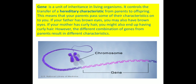A gene is a unit of inheritance in living organisms. It controls the transfer of hereditary characteristics from parents to offspring. This means your parents pass some of their characters on to you — if your father has brown or grayish eyes, you may have the same; if your mother has curly or straight hair, you might also have the same. However, different combinations of genes from parents result in different characteristics. The genes contain DNA, and these DNA molecules contain the information necessary for constructing and organizing a cell.